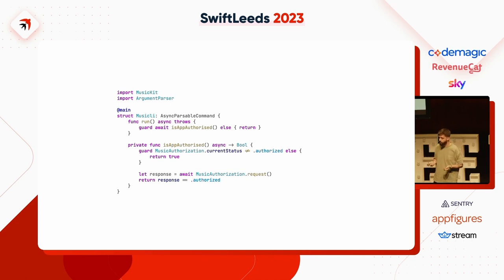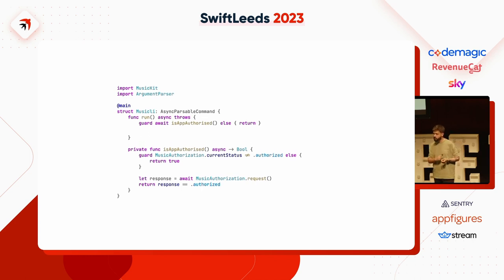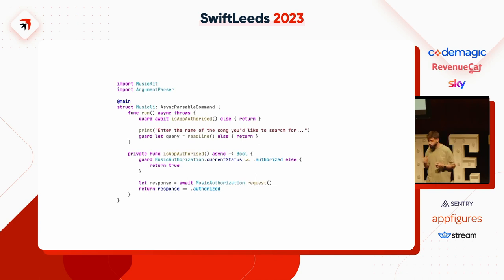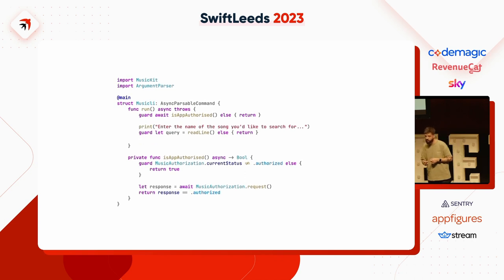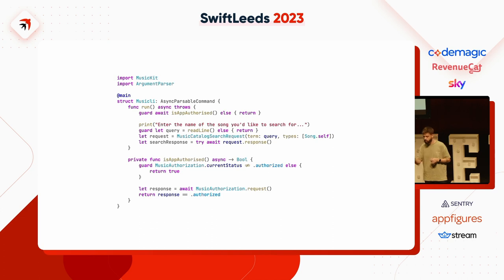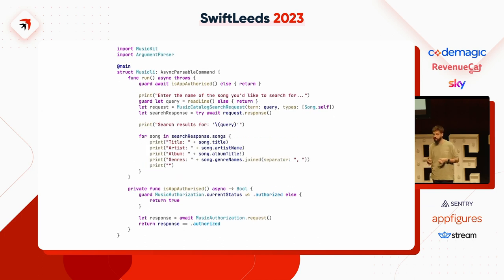I can use the built-in readline operator — super simple. It returns an optional string, no async/await or closures needed. You just call readline and execution holds until the user hits enter. I can then use that query to perform MusicKit operations with async/await and try, iterating through the songs the response returns and printing information about them — in this case, just title, artist, album, and genres directly from MusicKit.